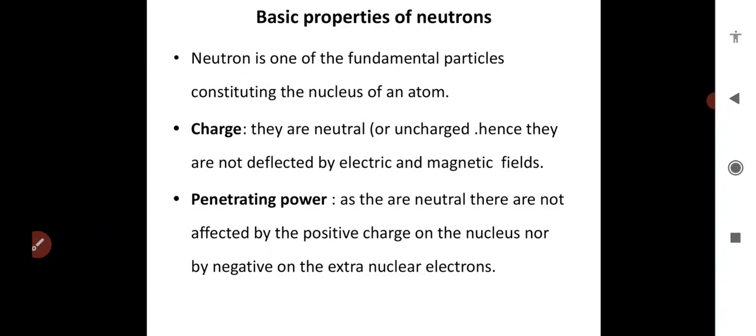We all know that the nucleus consists of protons and neutrons surrounded by electrons. The properties of proton and neutrons differ in charge, and mass is almost equal. Neutrons are fundamental particles, and protons and neutrons are collectively known as nucleons.